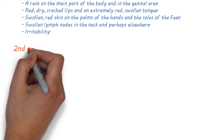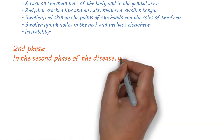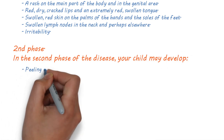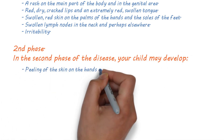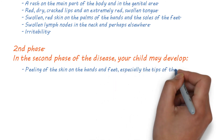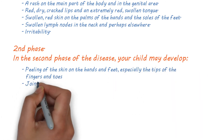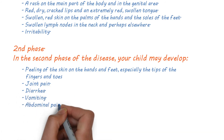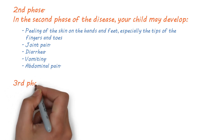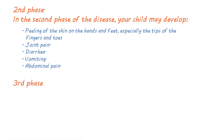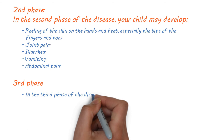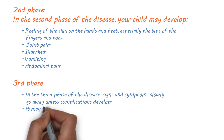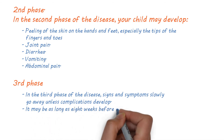In the second phase of the disease, your child may develop peeling of the skin on the hands and feet, especially the tips of the fingers and toes, often in large sheets, as well as joint pain, diarrhea, vomiting, and abdominal pain. In the third phase, signs and symptoms slowly go away unless complications develop. It may be as long as eight weeks before energy levels seem normal again.